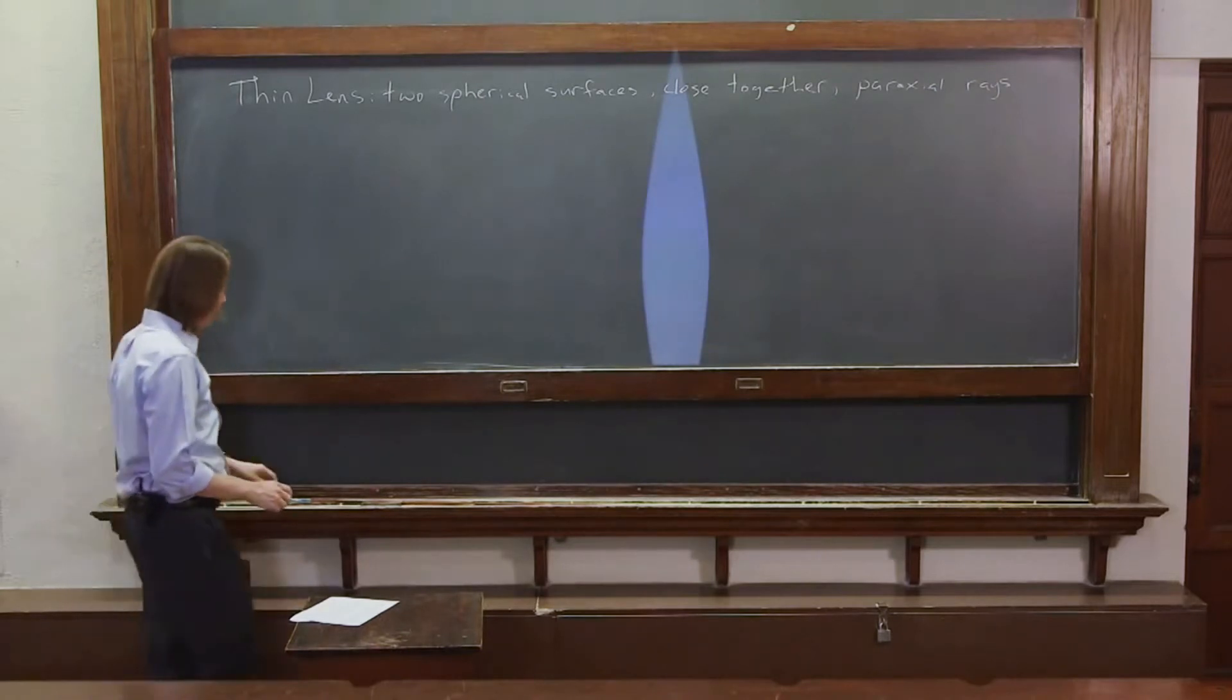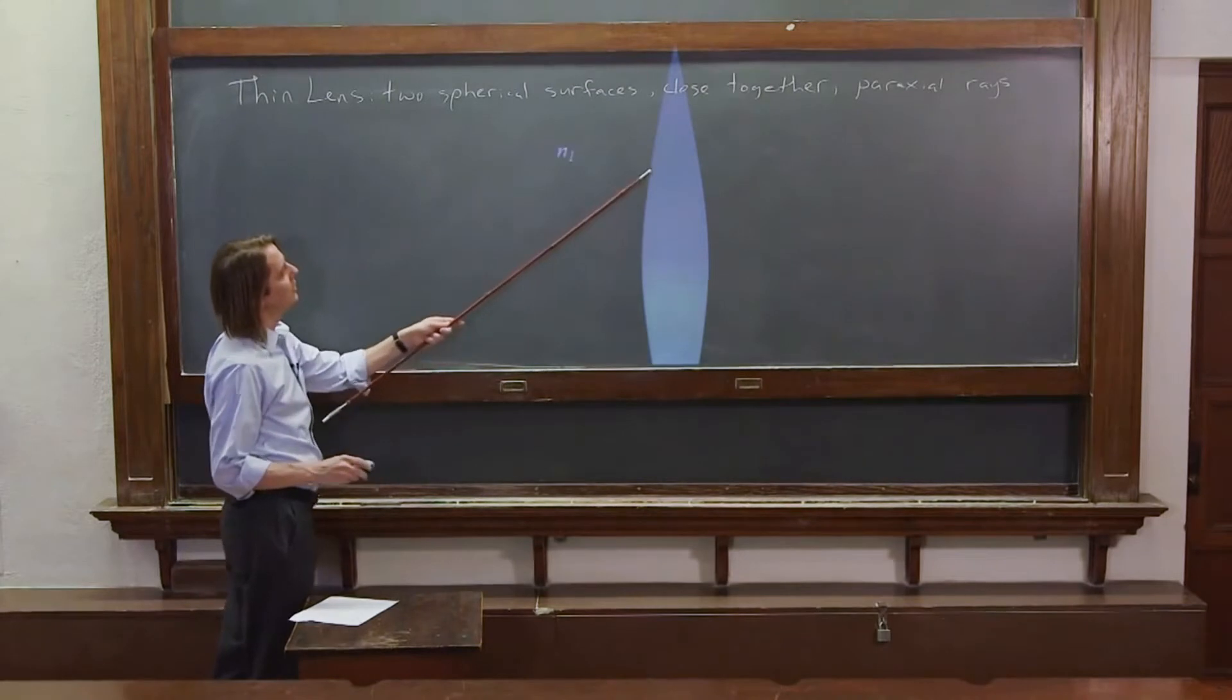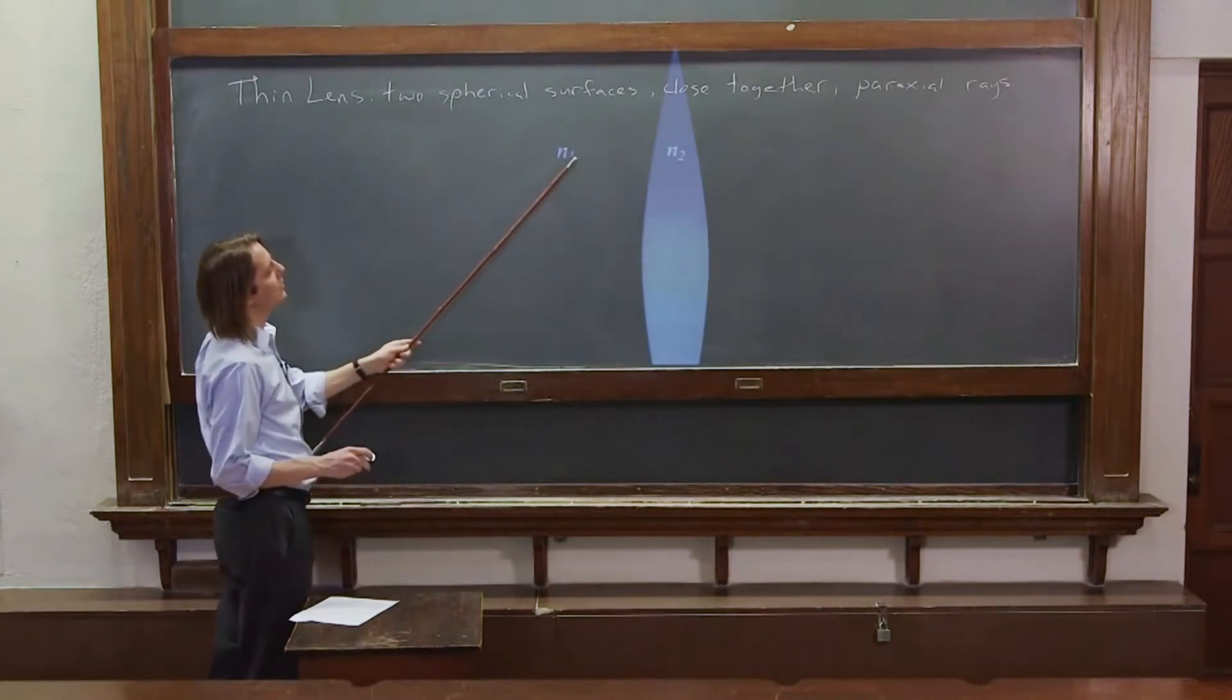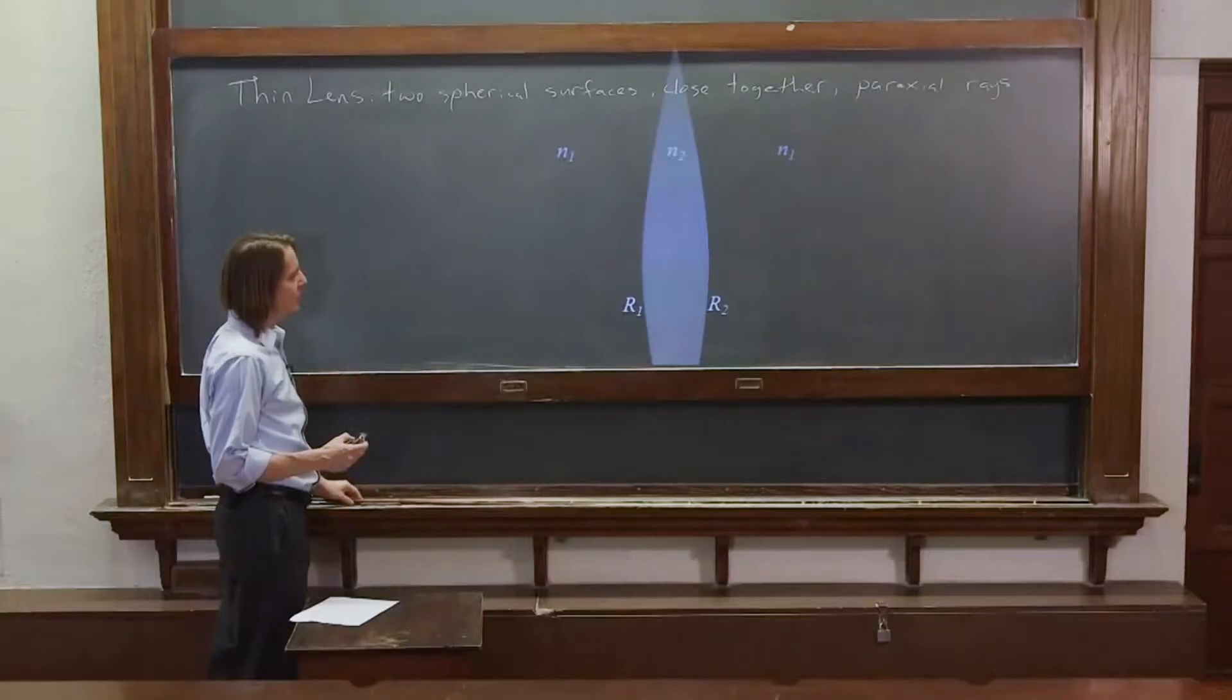Here's one. It's got two curved surfaces. It's made of some index N2 and it's in a medium of index N1. And the surfaces will even calculate if they have different radii. It doesn't even have to be symmetric.